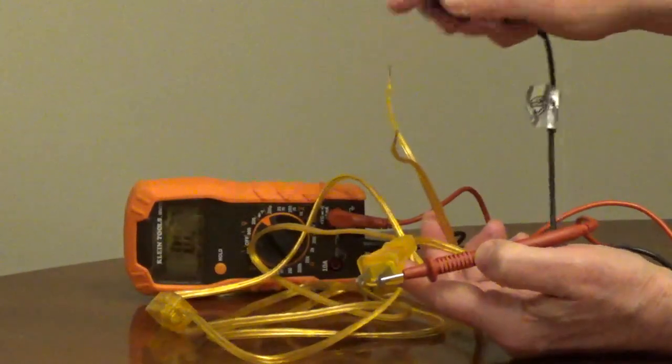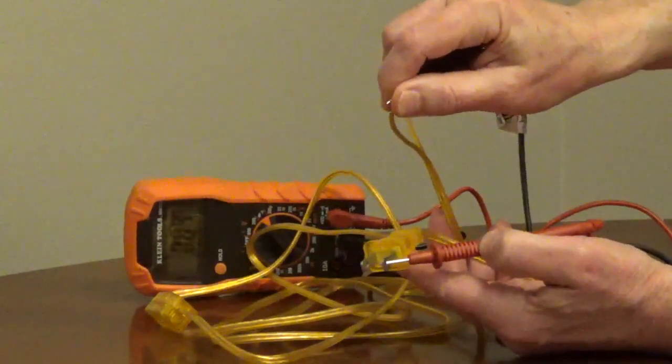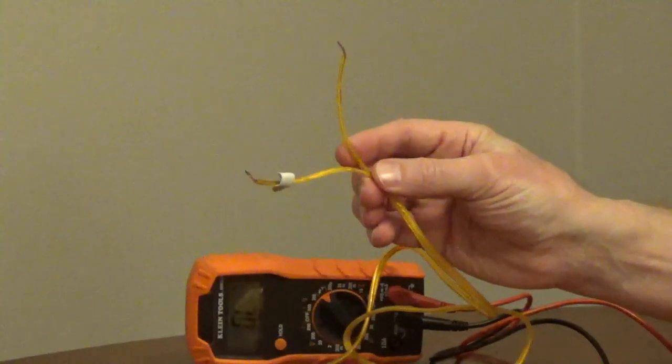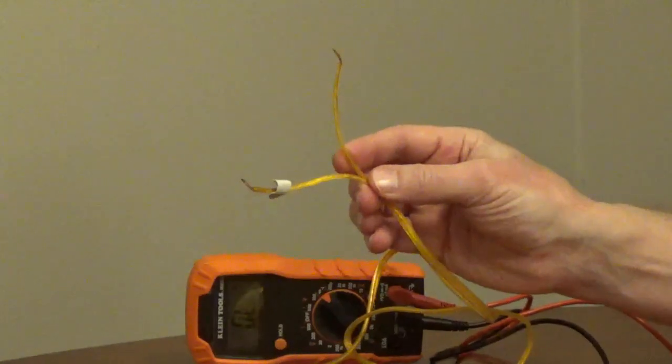Mark the neutral wire. This gets connected to the silver neutral screw on the lamp socket. The other wire is hot and it gets connected to the brass hot screw on the lamp socket.